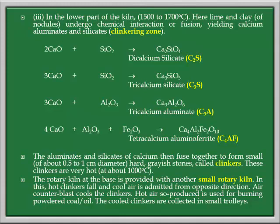In the clinkering zone, the main products of cement are formed: dicalcium silicate, tricalcium silicate, tricalcium aluminate, and tetracalcium aluminoferrite. We have to remember C2S, C3S, C3A, and C4AF. C stands for calcium oxide, S for SiO2, A for Al2O3, and F for Fe2O3. C2S stands for 2CaO + SiO2, giving Ca2SiO4. C3S stands for 3CaO + SiO2. C3A stands for 3CaO + Al2O3, and C4AF stands for 4CaO + Al2O3 + Fe2O3. In this way, the four main products of cement are formed. The aluminates and silicates of calcium then fuse together to form small hard grey stones called clinkers.